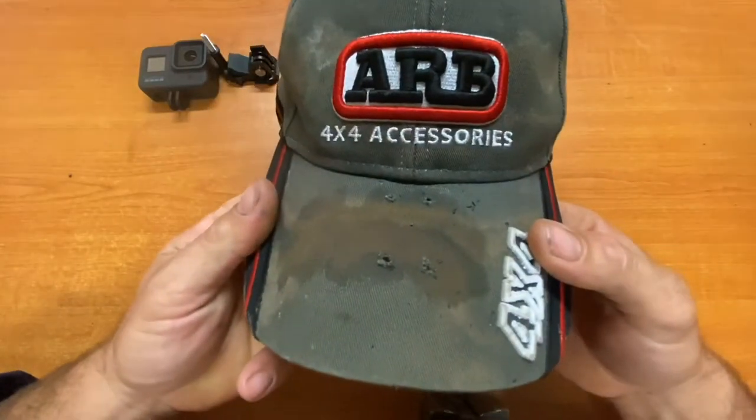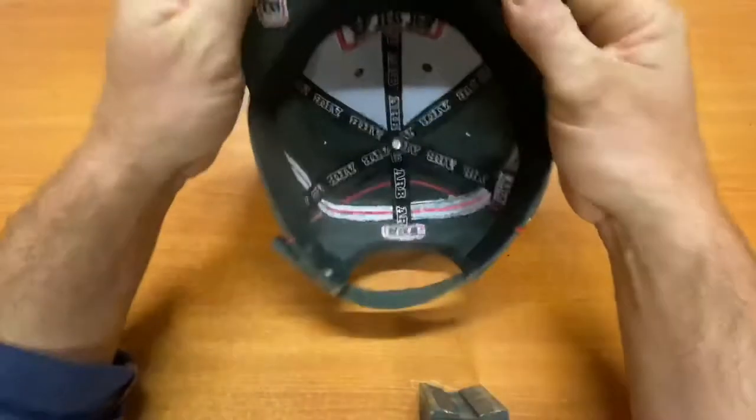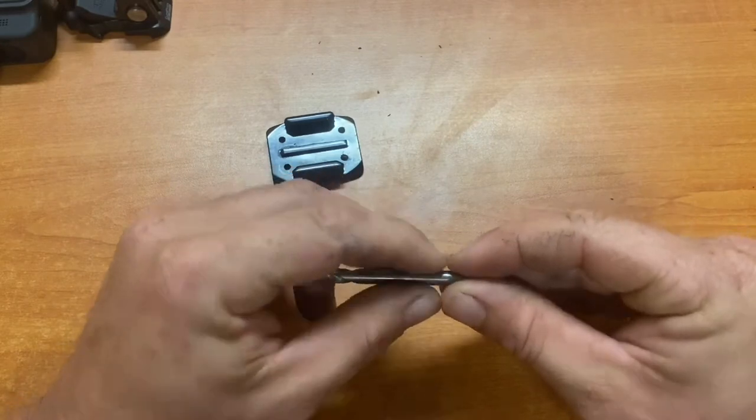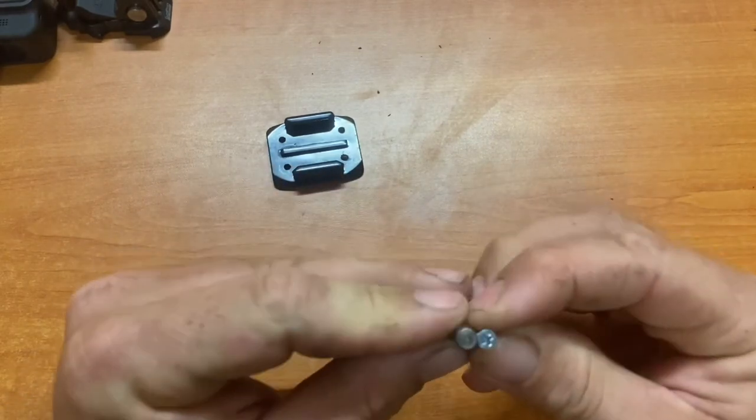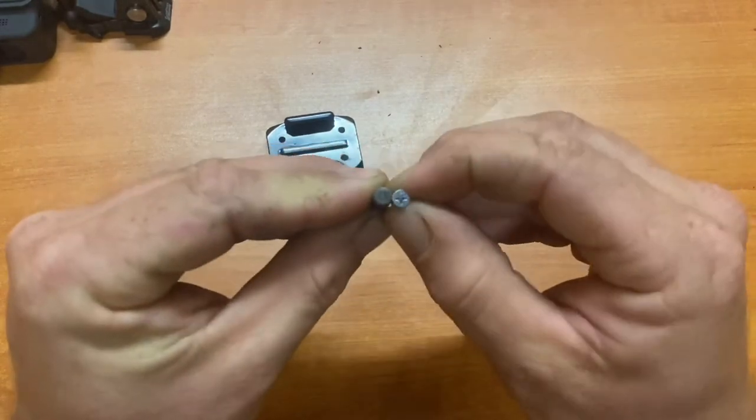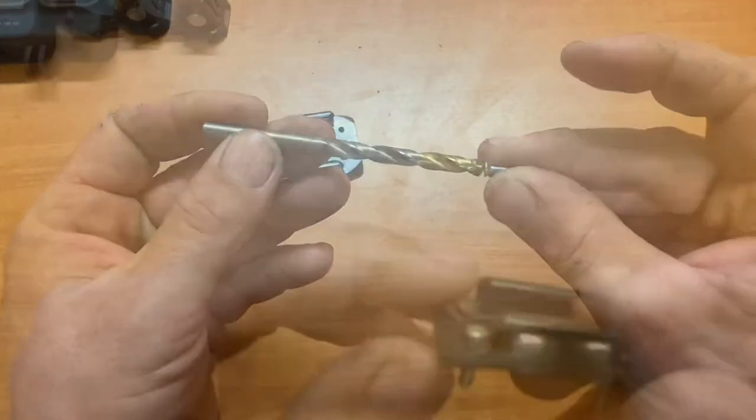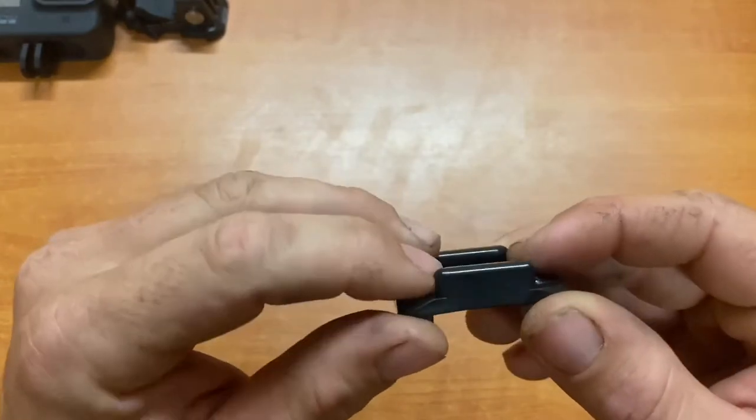We need to countersink the mount so that the screw sits flush. A quarter inch drill bit is the right size for the head of my screw. Once you find the right drill bit, go and countersink the holes that you've drilled. That way your screw sits nice and flush.